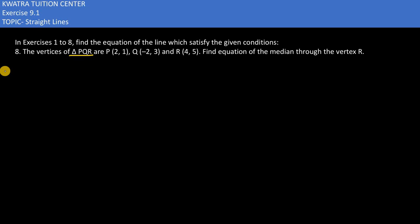Now the 8th one says the vertices of triangle PQR. Three vertices are in our triangle, that's PQR. Find the equation of the median through the vertex R. Now what do we need? We need to take a line.